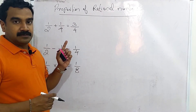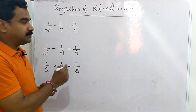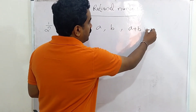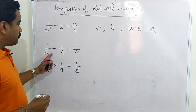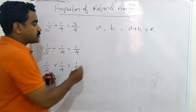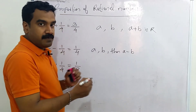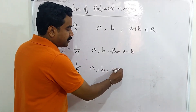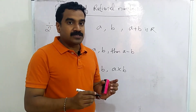What is the closure property? 1 by 2 is a rational number and 1 by 4 is a rational number. What is 1 by 2 plus 1 by 4? That is 3 by 4, which is also a rational number. So if A is a rational number and B is a rational number, then A plus B is also a rational number. Similarly, 1 by 2 minus 1 by 4 equals 1 by 4, so A minus B is also rational. And 1 by 2 into 1 by 4 is 1 by 8, so A into B is also a rational number.